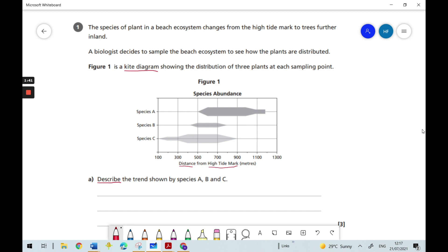And we've got the units here in meters and we can see that the number of species have been counted every 200 meters because it goes from 100 to 300 to 500. So every 200 meters they've counted the number of species A, B and C and recorded it. And this kite diagram is showing the data for that.